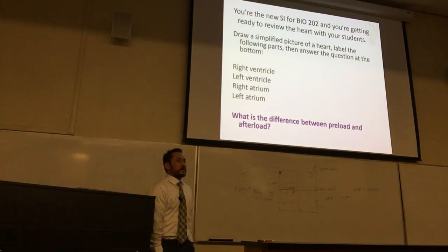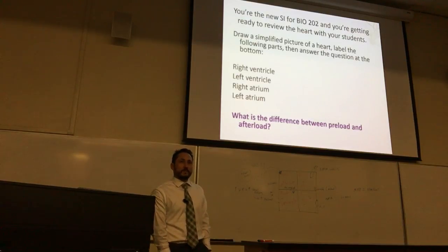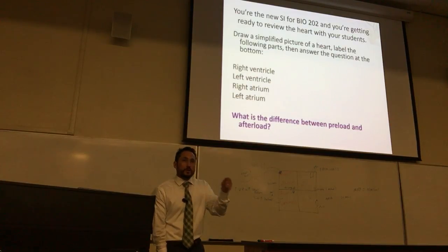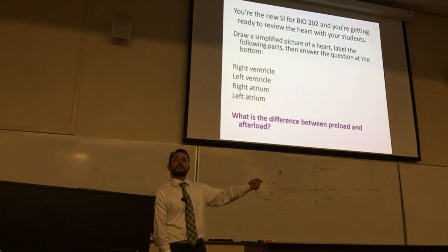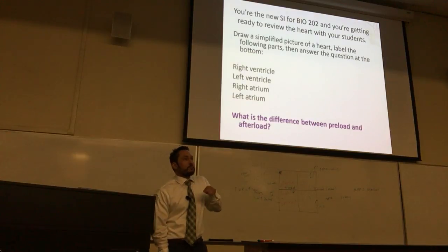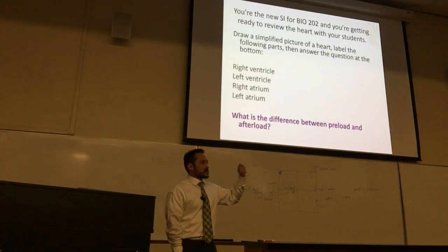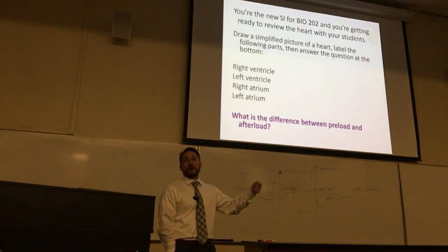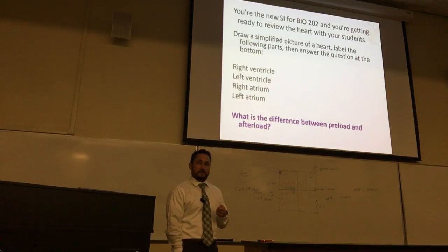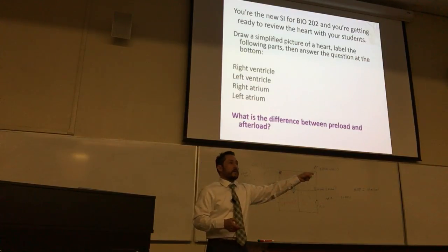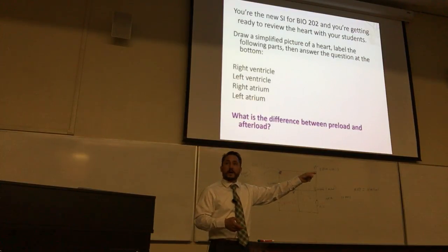This is what we refer to as Frank-Starling's Law of the Heart. Simply put: the more that you put in, the more that you get out. If you bring more blood flow back to the right side of the heart, on the next successive heartbeat you get a larger cardiac outflow. More inflow leads to a contraction that pushes more output out of the heart.